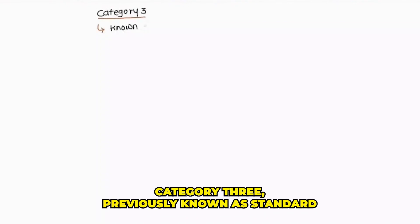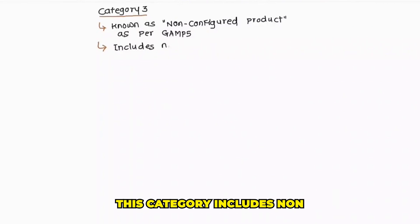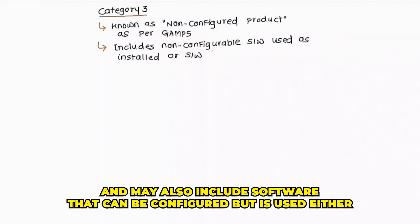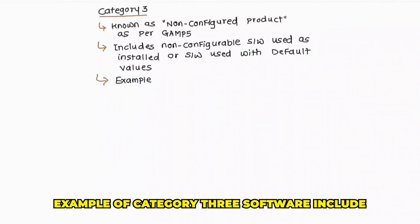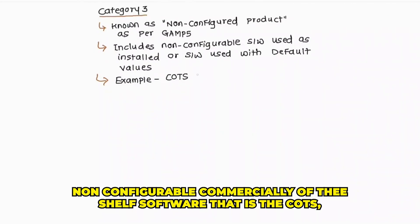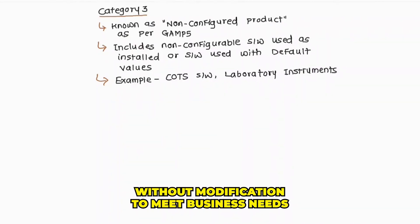Next is category 3. Category 3, previously known as standard software in GAMP 4, has been renamed to non-configured product. This category includes non-configurable software used as installed, and may also include software that can be configured but is used either unconfigured or with the standard defaults provided by the software supplier. Examples of category 3 software include non-configurable commercially off-the-shelf software (COTS), laboratory instruments, and software used without modification to meet business needs.